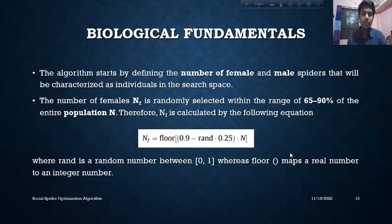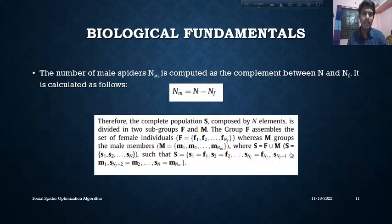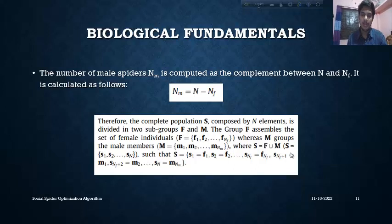Let's start the algorithm by defining the number of female and male. We will count the number of females within the range of 65 to 90% of the entire population, using a floor function and a random number between 0 and 1. Once we have the number of females, substituting this from the total number of members gives us the number of males. We construct a set S composed of N elements, divided into two subgroups: females denoted F1, F2 up to Fn, and males denoted M1, M2 up to Nm, using the union operation.